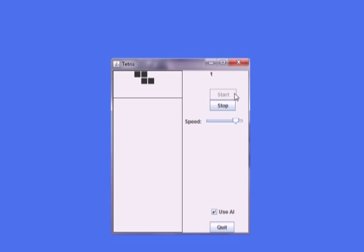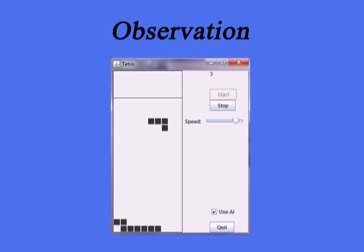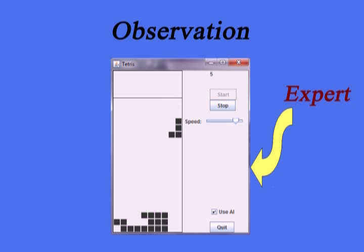If the agent doesn't know anything about Tetris, how will it learn to play? The agent is going to observe someone playing Tetris and learn that way. But if someone knows how to play Tetris, why don't they just program the agent?